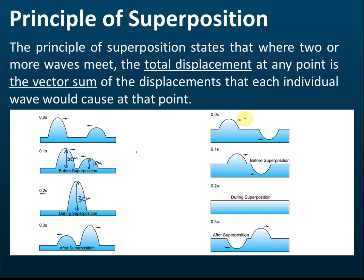Now let's see another example. At 0 seconds there are two waves. The first one has an amplitude of 1 cm and the second wave is a trough with a displacement of negative 1 cm. At 0.1 seconds the two waves are getting closer but haven't met yet. At 0.2 seconds, during superposition, the amplitude of the resultant wave equals the vector sum: 1 cm plus negative 1 cm, which equals 0 cm.